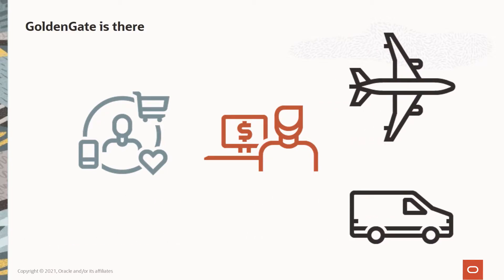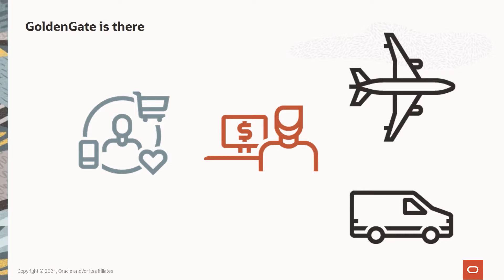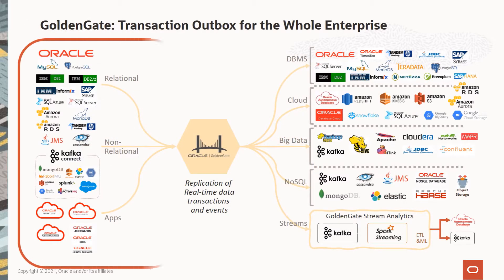GoldenGate replicates huge volumes of transactional data in real time with complete integrity. If you look at the left side of the diagram, these are the source systems that GoldenGate can capture transactions from. This includes Oracle and non-Oracle databases on-premises and cloud, non-relational databases and applications.